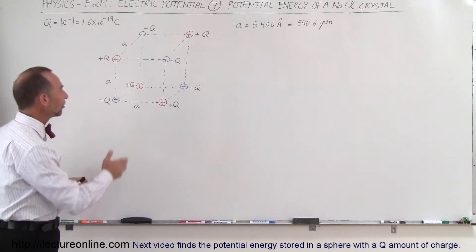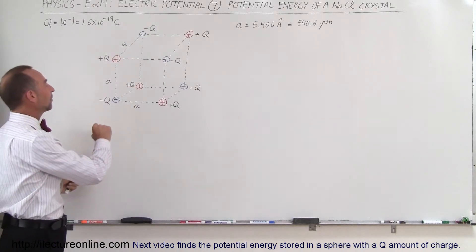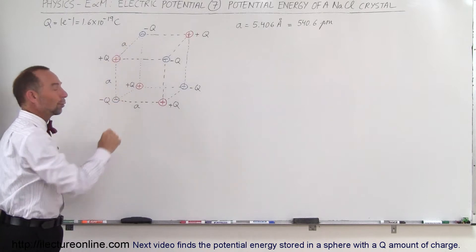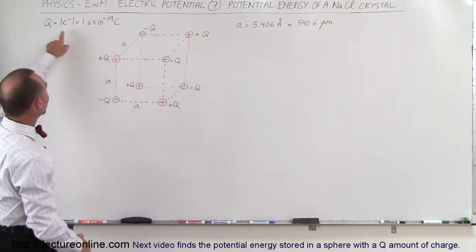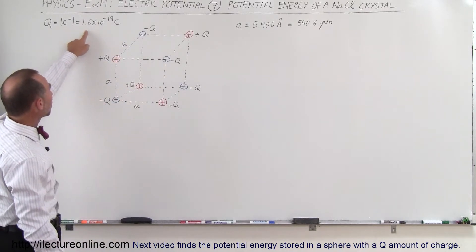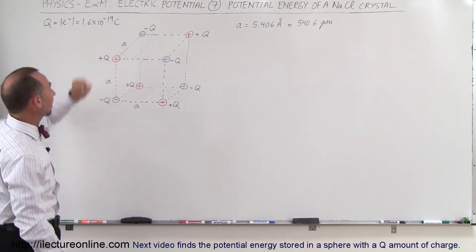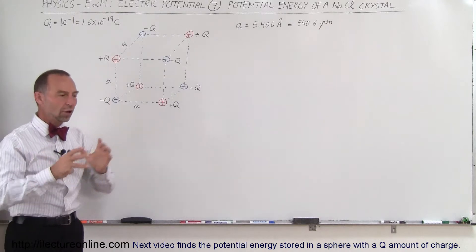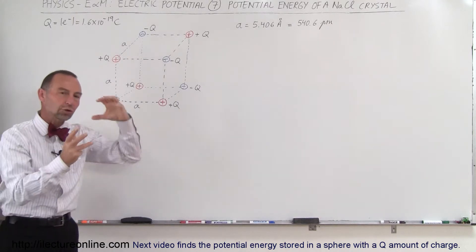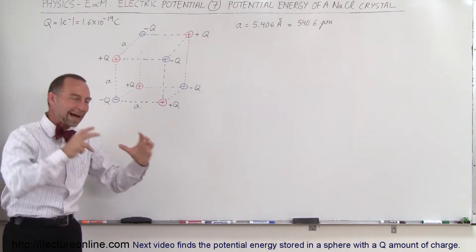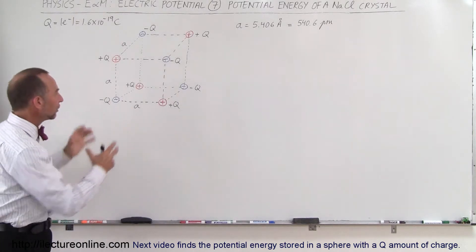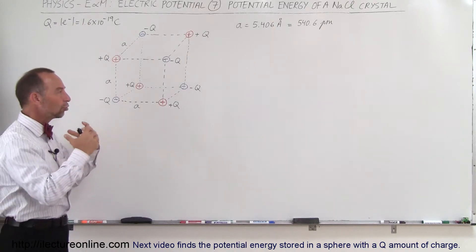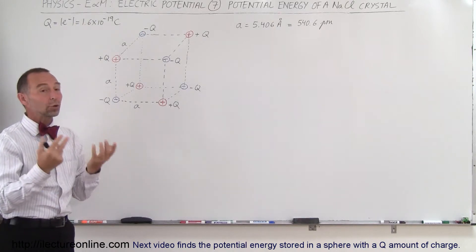They're ions now. They're singly ionized, which means that each atom or each ion carries a charge of a single electron, which is 1.6 times 10 to the minus 19 Coulombs. So by pushing all those ions together into a crystal lattice, the lattice will store energy.